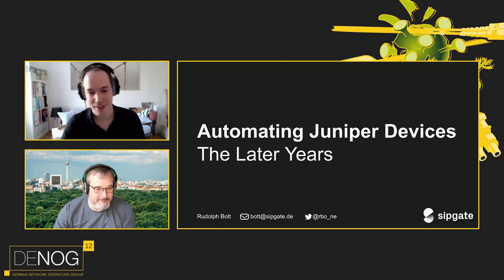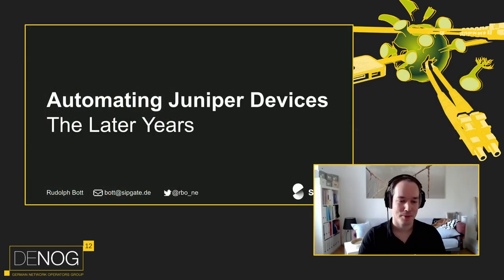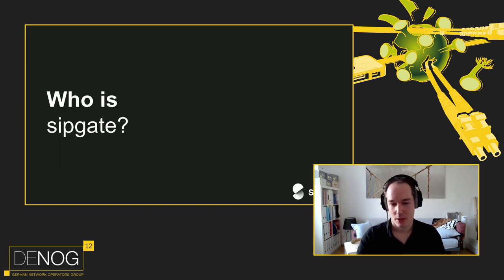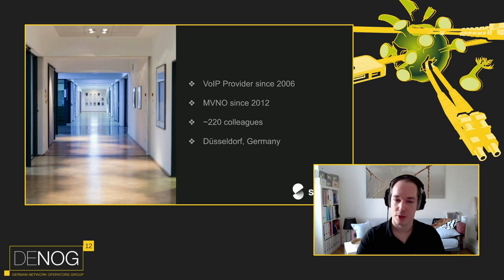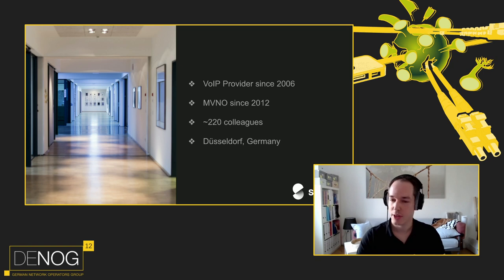Thank you Stefan, and welcome everyone to this session. A few words about SIPgate: we are a Voice over IP provider and have been doing so since 2006. We are also an MVNO, a mobile virtual network operator since 2012, and we operate our own mobile core network. As of today, we are around 220 colleagues located in Düsseldorf, Germany — and since March, mostly in our home offices.